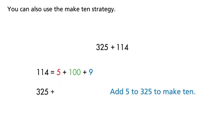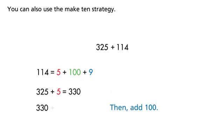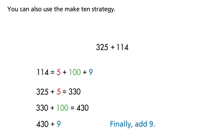Add 5 to 325 to make 10. Then add 100. Finally, add 9.